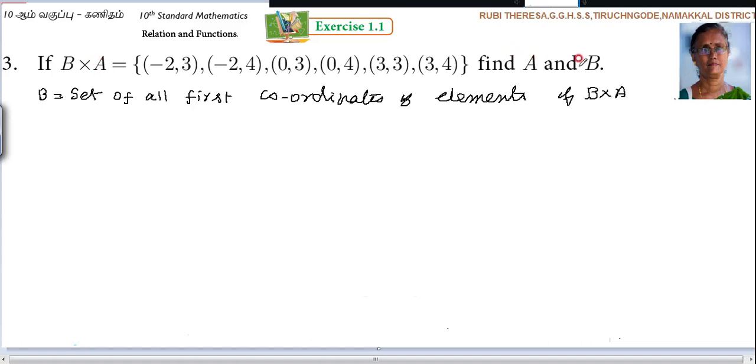But they have asked for A and B. You can write B first because they have given B cross A. Some students, if they write A first, will make a mistake. So it is better to write B.